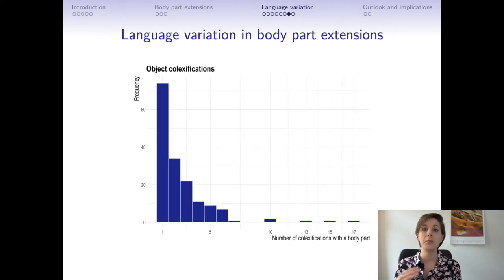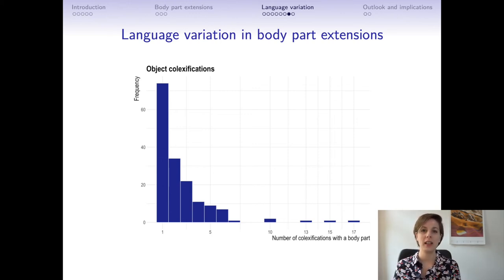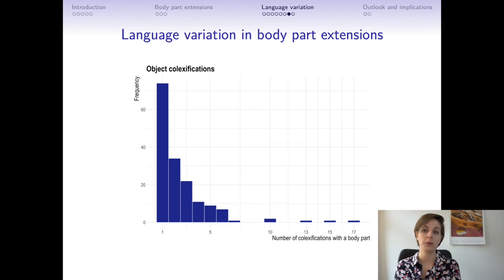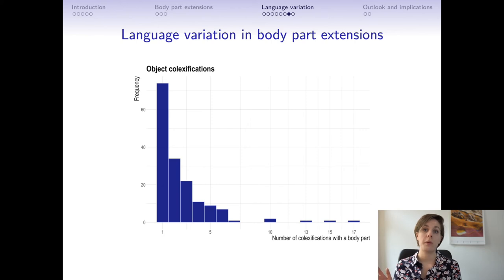The next graph is the mirror image of the previous one. Here you see that most objects are colexified with only one body part term, and only a few objects colexify with more than one body part. Those include, for example, 'egg,' which colexifies with 17 body parts, and others such as 'leaf' and 'root,' which colexify with more than 10 body part terms.